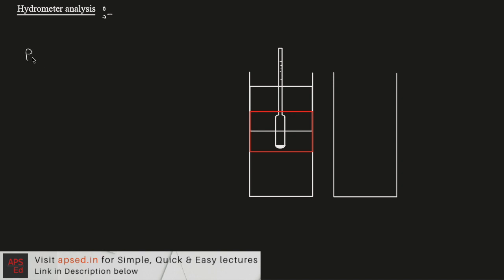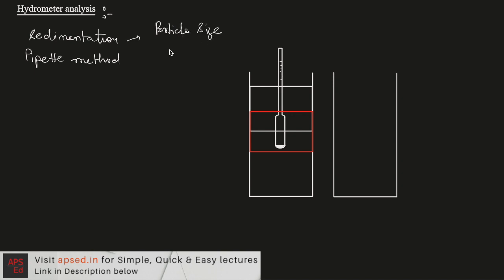Last time we talked about the pipette method for doing the sedimentation analysis, and we use this sedimentation analysis or sedimentation method for the particle size analysis for fine-grained soils. There are two ways: one is the pipette method and the second one is the hydrometer method. In the previous video we covered the pipette method and here we will talk about the hydrometer method.